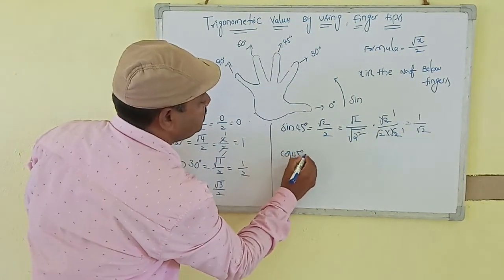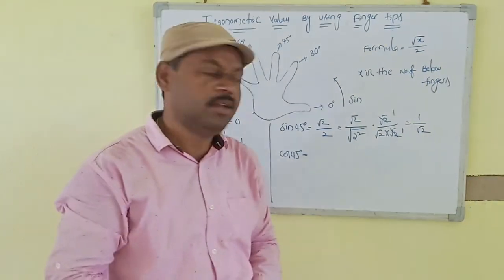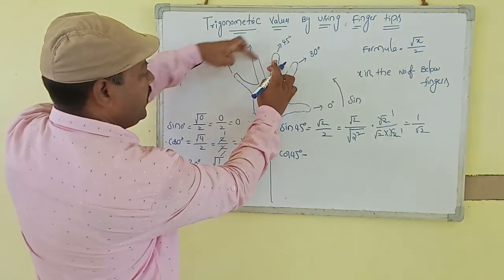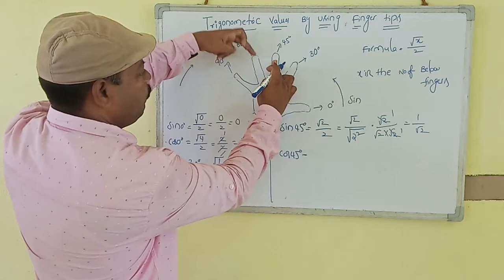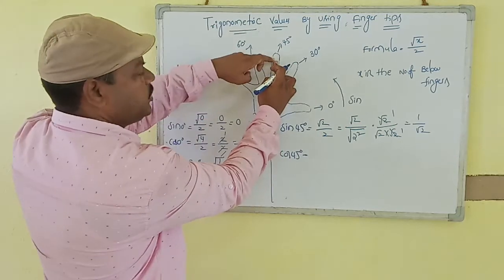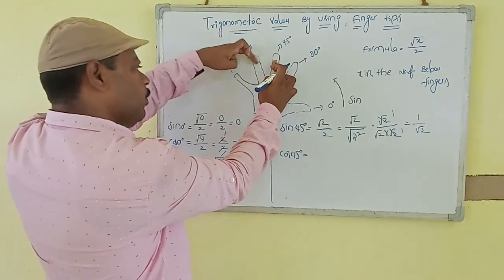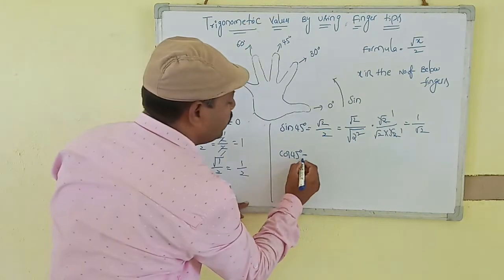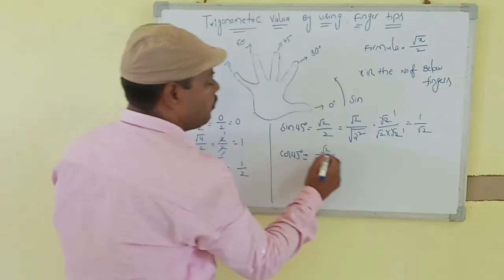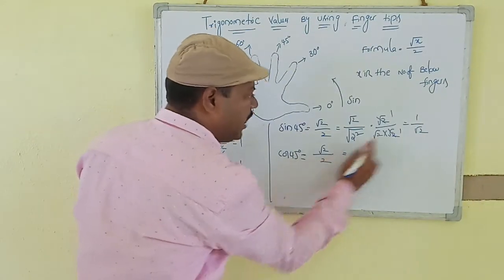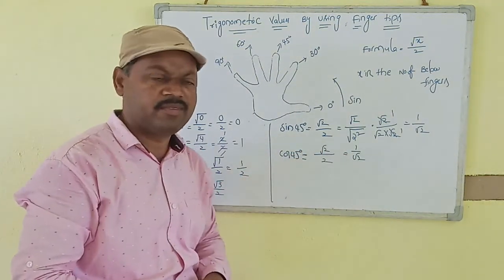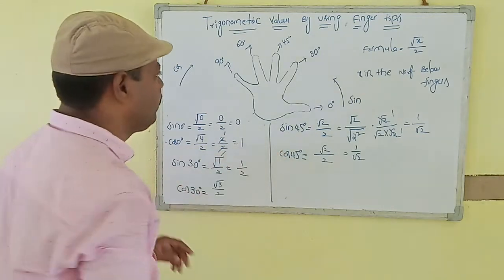Now find cos 45 degrees. In the cosine (clockwise) direction from 45 degrees, how many fingers do we cross? One, two — two fingers. So cos 45° = √(2)/2, which simplifies to 1/√2. So sine 45° equals cos 45°.